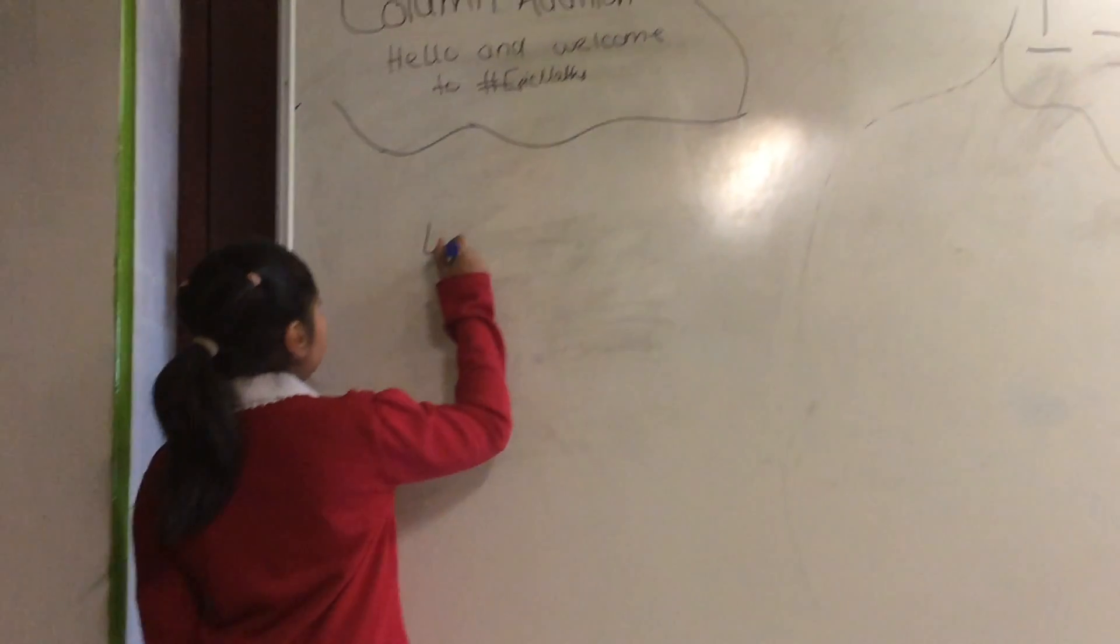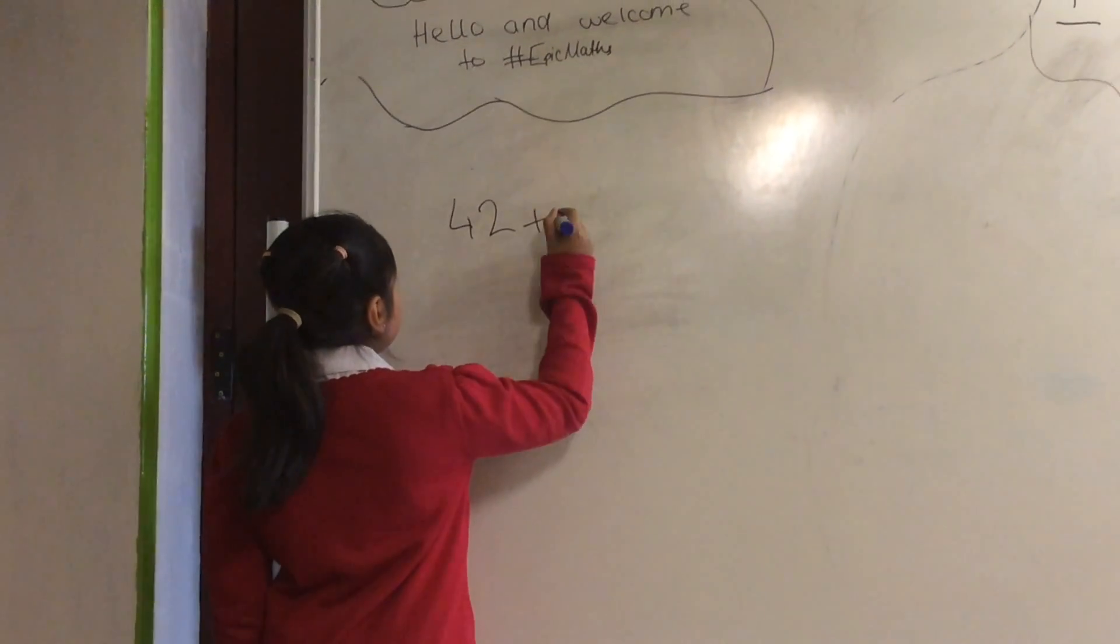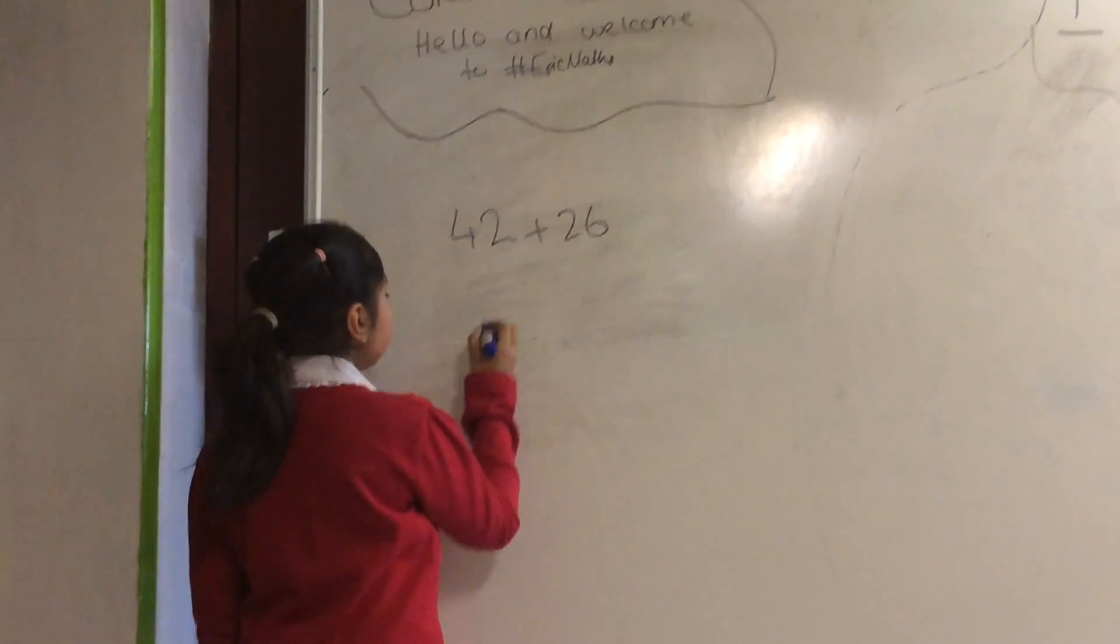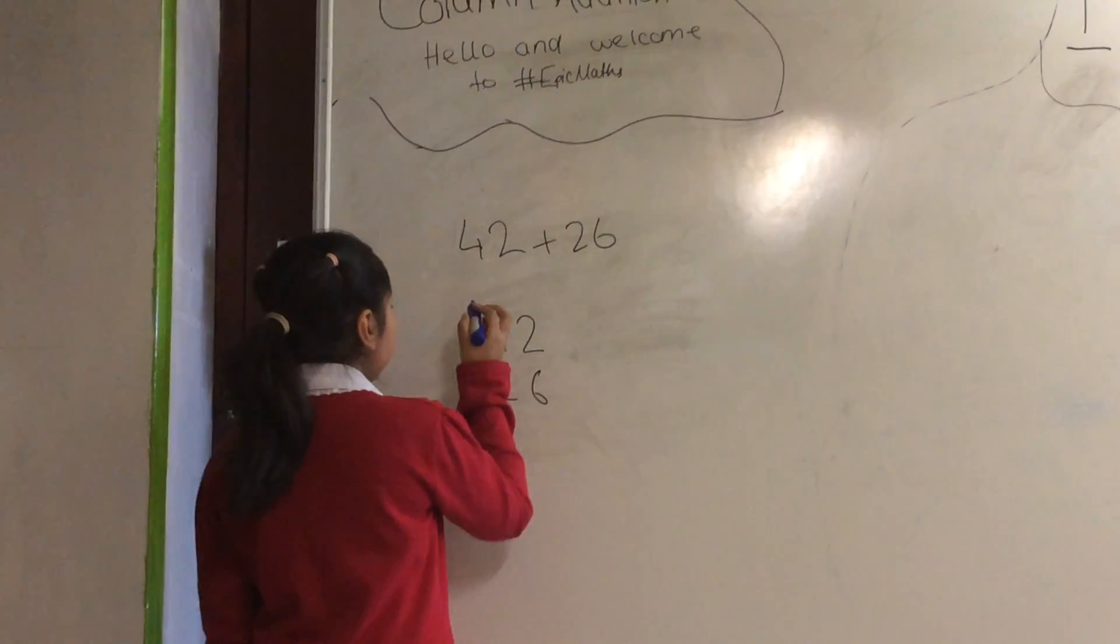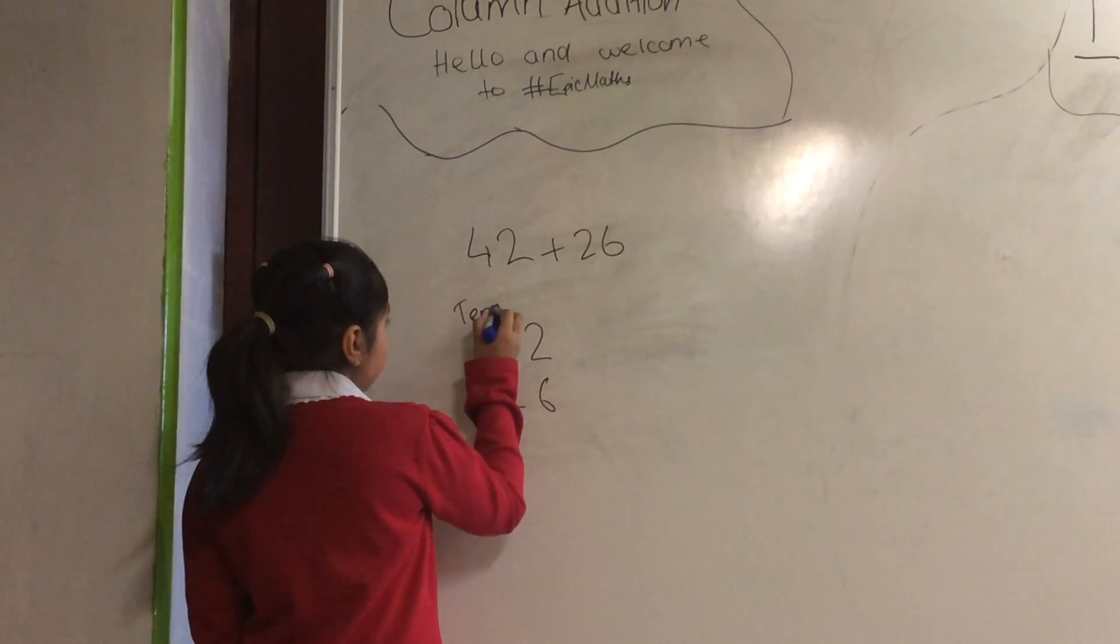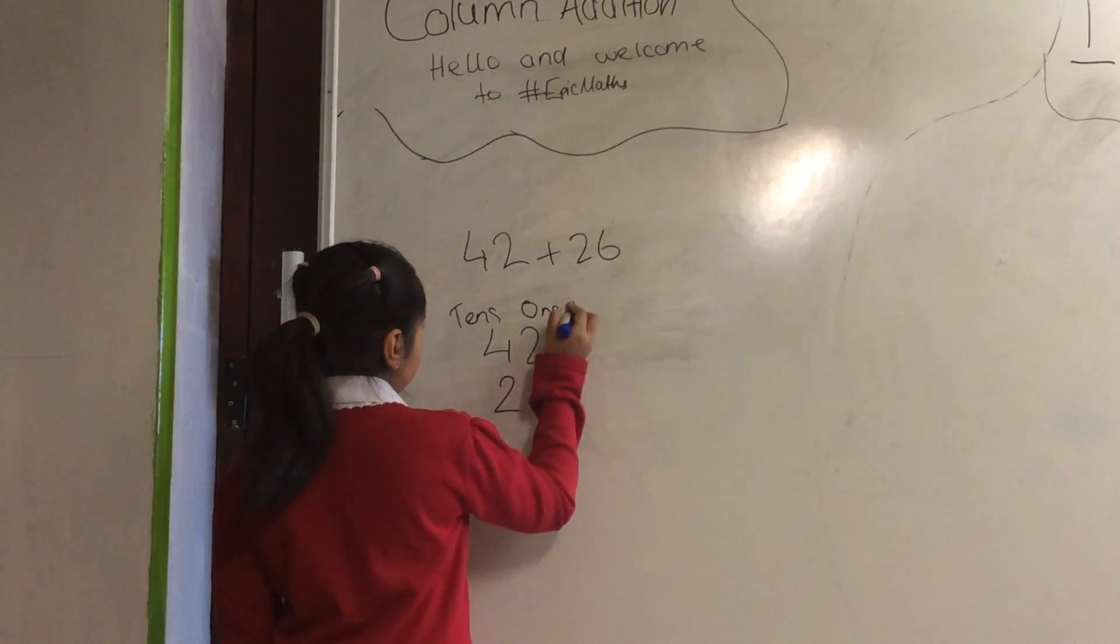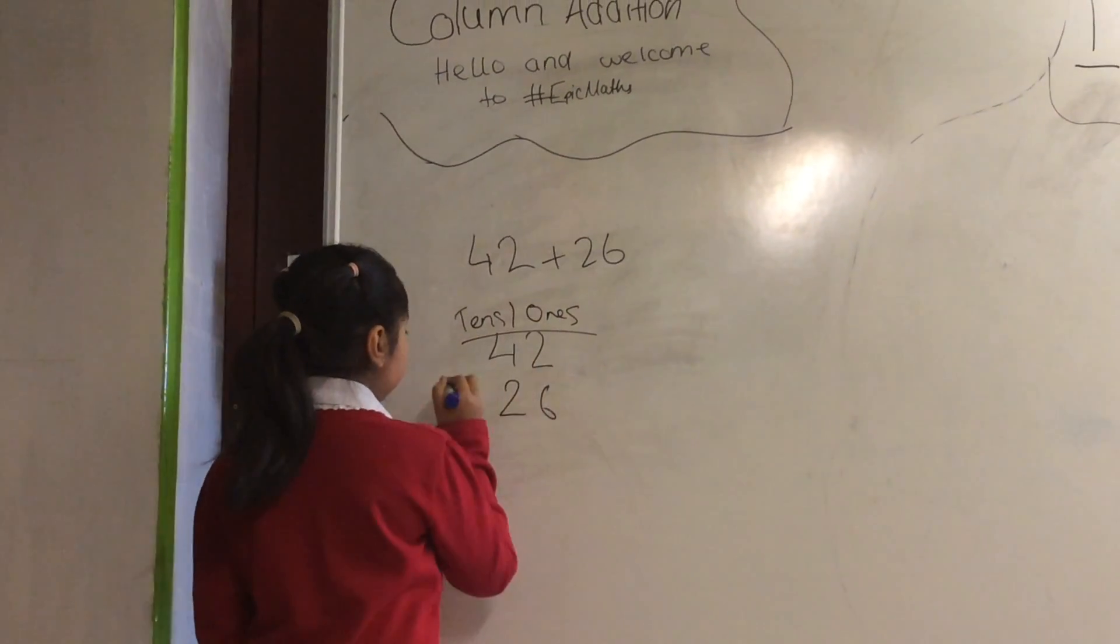So take two numbers, let's say 42 and 26, and put them on top of each other like this: 42, 26. Just to make it easier, put tens and ones and put the add sign.